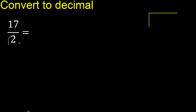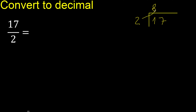17 divided by 2. 17 is not less, therefore 2 multiplied by which number is nearest to 17 but not greater. 2 multiplied by 9 is 18, which is greater. Multiply by 8 is 16, which is not greater. Subtract — the remainder is 1.